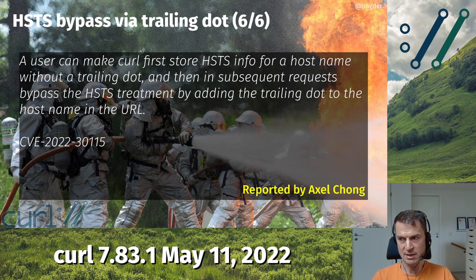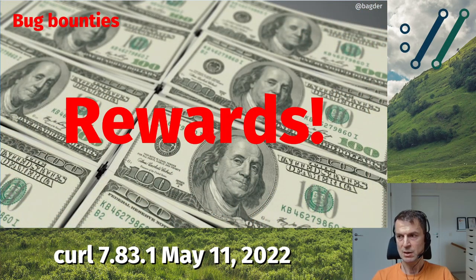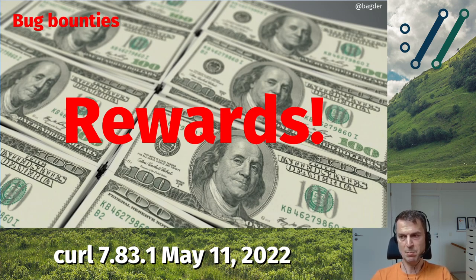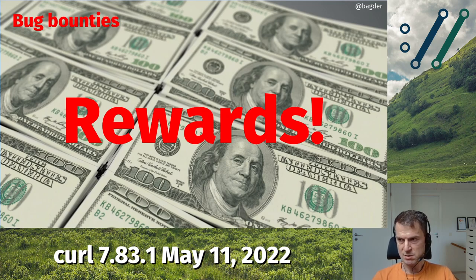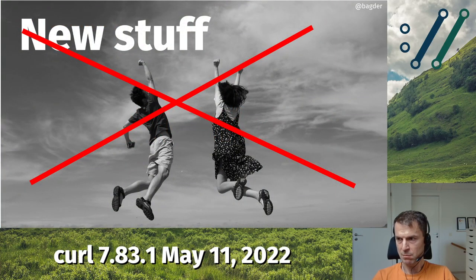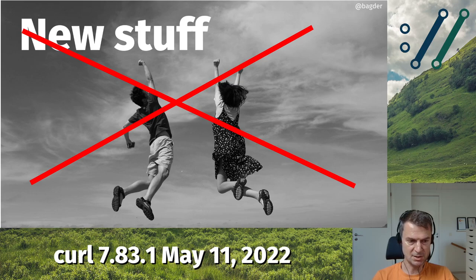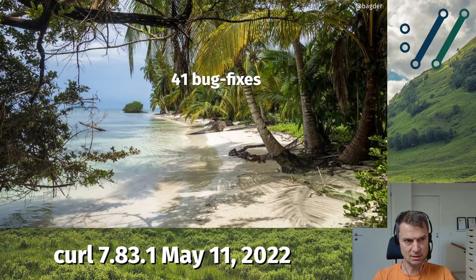Those six security issues are really the main reasons why we did this release. There will be rewards for these issues — the rewards are being handed out slightly delayed from publication. In the last release, reporters got $2,400 each for medium severity reports, and I'm guessing the new ones might end up in the same ballpark. This is a patch release, so we're only fixing problems, but we still have an impressive 41 fixes in this release.